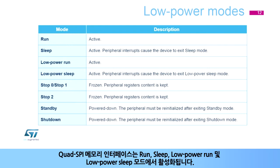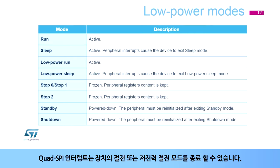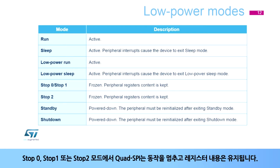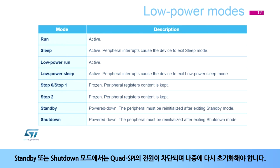The Quad SPI memory interface is active in Run, Sleep, Low Power Run, and Low Power Sleep modes. A Quad SPI interrupt can cause the device to exit sleep or low power sleep modes. In Stop 0, Stop 1, or Stop 2 mode, the Quad SPI is frozen and its register contents are kept. In Standby or Shutdown mode, the Quad SPI is powered down and must be re-initialized afterwards.